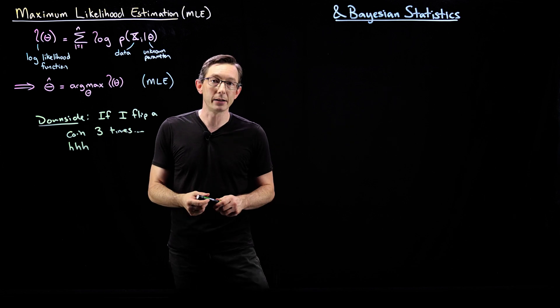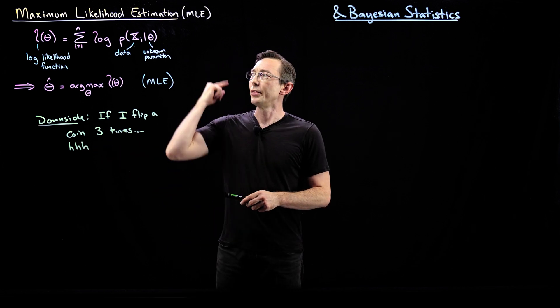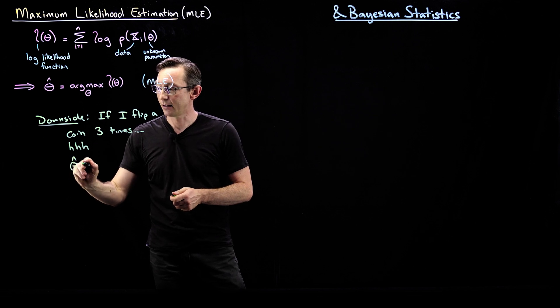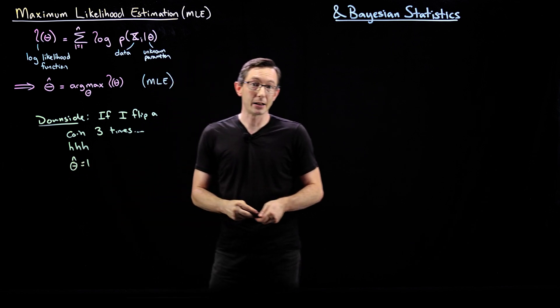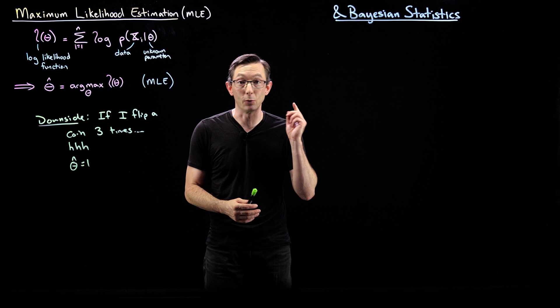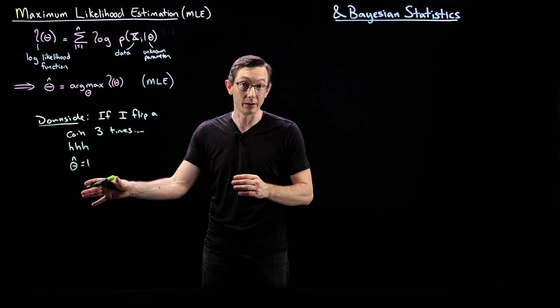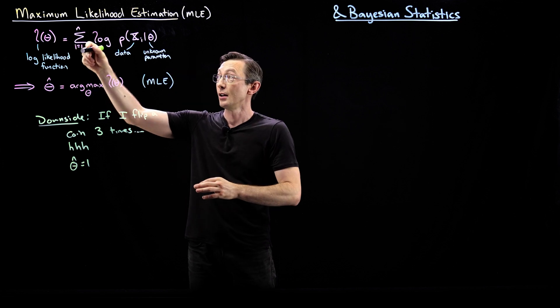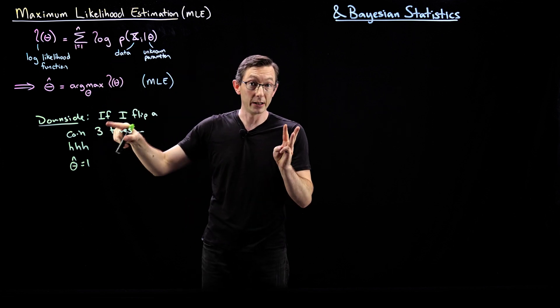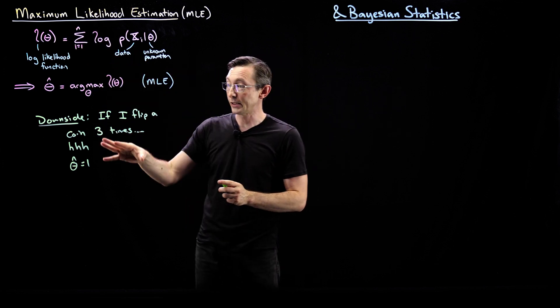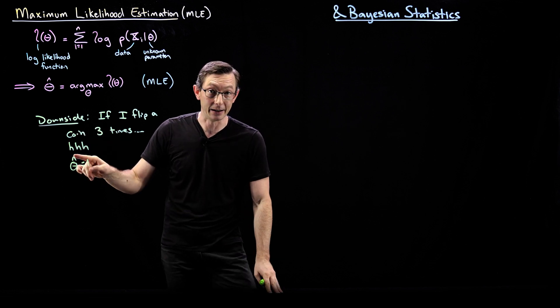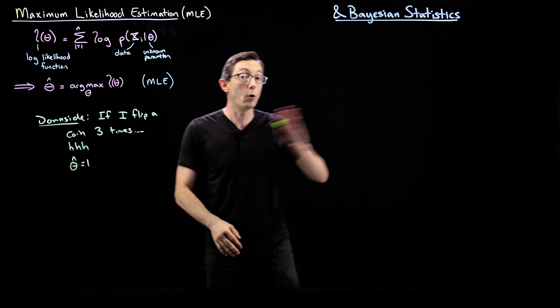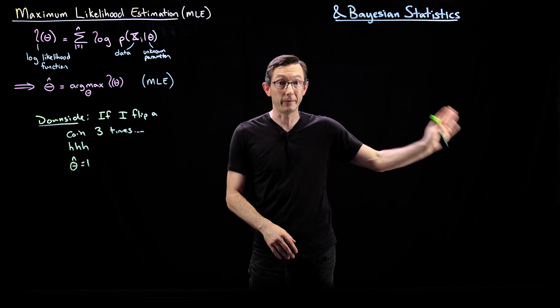If I get three heads in a row, the maximum likelihood estimate, the MLE for theta hat would equal one. It says that there is a probability of getting heads that should equal one. You can go through and actually calculate this. These are each Bernoulli random variables. So you can actually compute this for n equals three of three Bernoulli coins. And you can convince yourself that with this data, the maximum likelihood estimator will say that the coin is always going to flip heads for all future flips.